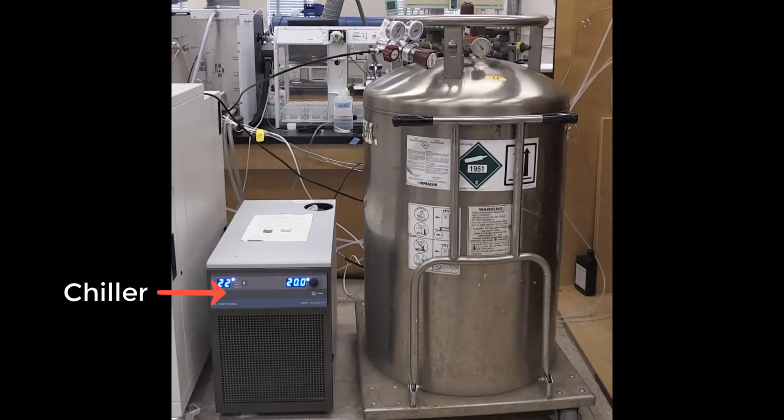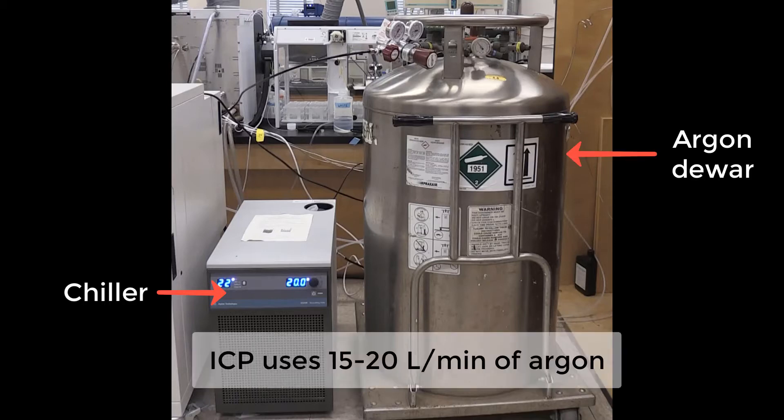An ICP requires a chiller to maintain the instrument's temperature. Sample introduction and plasma generation require a gas source.